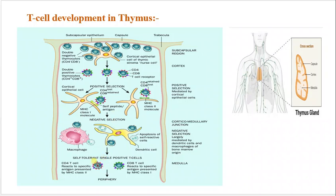Those cells that pass both selections become self-tolerant, single positive T-cells — either CD4 T-cells or CD8 T-cells. Only about 3 to 5 percent of pro T-cells successfully pass both selections and become mature T-cells. After maturation, they migrate to the periphery. You need to remember which type of selection occurs in which region and how the mature T-cell is formed. Thank you for your interest.